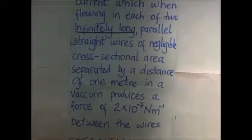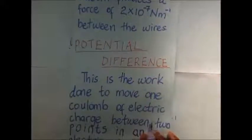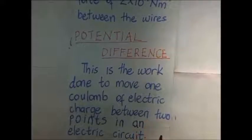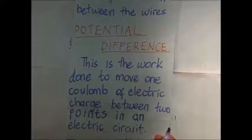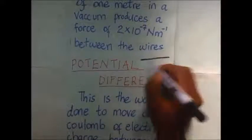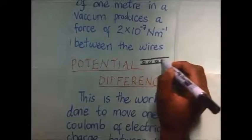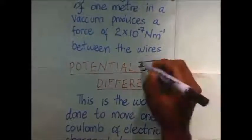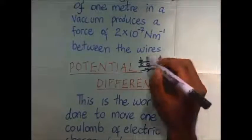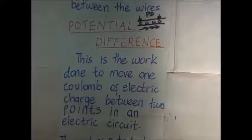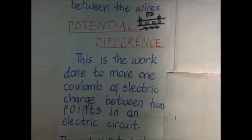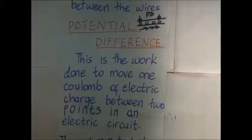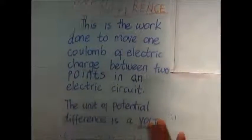The next key definition is potential difference. Potential difference is the work done in moving one Coulomb of electric charge between two points in an electric circuit. You might have a wire with charges travelling within it — the work done in moving one charge from one point to another is the potential difference between those two points. The potential difference between two points is one volt if the work done to move one Coulomb of charge is one Joule. The unit of potential difference is the volt.